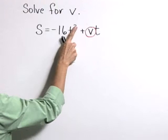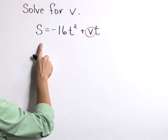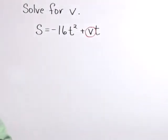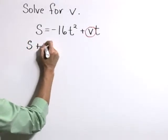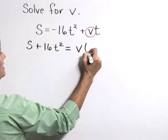Let's start here by moving our negative 16 t squared term to the other side by adding it over, adding it to both sides. So our next step is going to read s plus 16 t squared is equal to v times t.